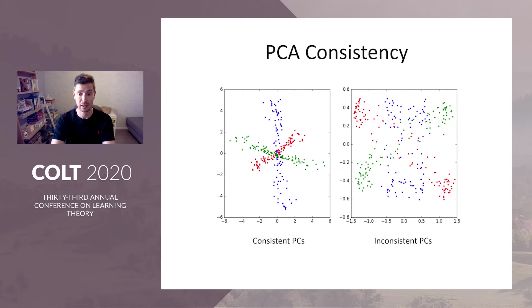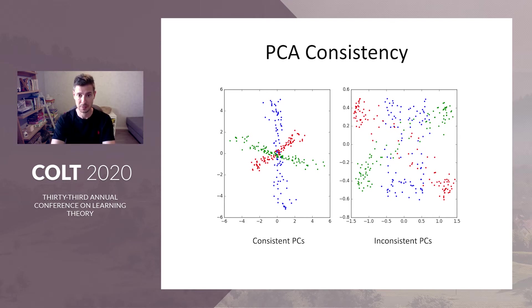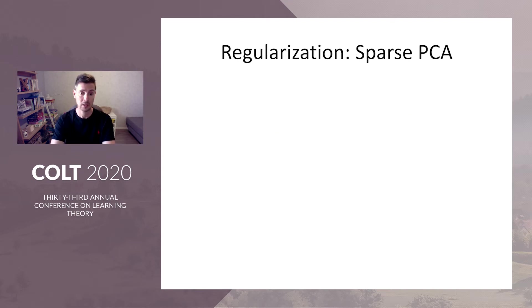For example, on the right we see a projection on inconsistent PCs, and on the left we see what would be a projection on consistent PCs. So we want this figure in our paper.